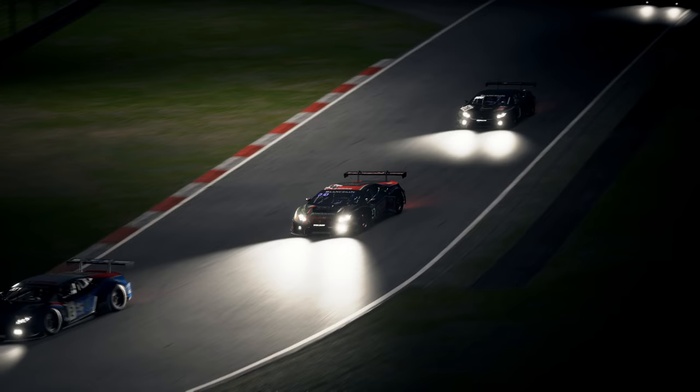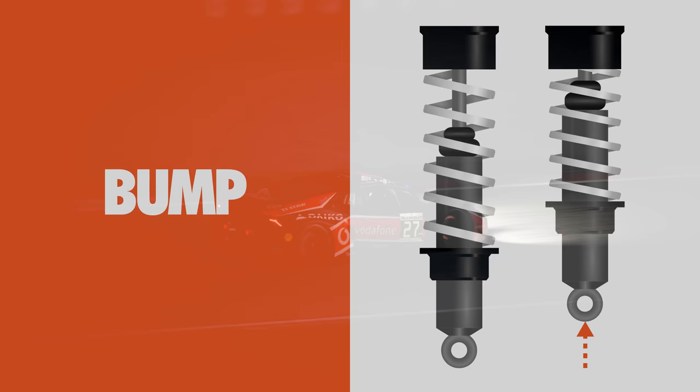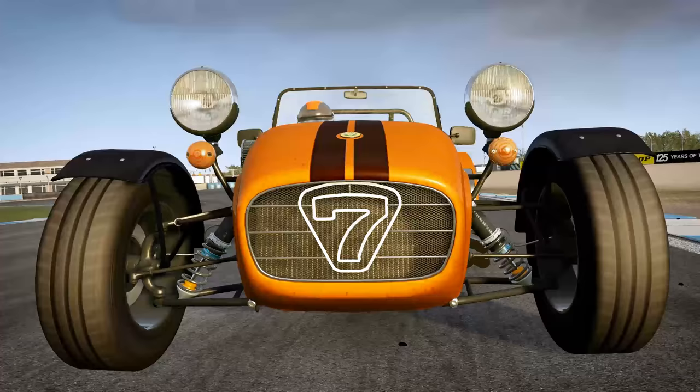Damper settings are broken down into two main areas called bump and rebound. Bump settings control how quickly the suspension springs can be compressed, like when you go over a bump. More bump value adds more resistance to the spring, and therefore slows the rate at which it compresses.